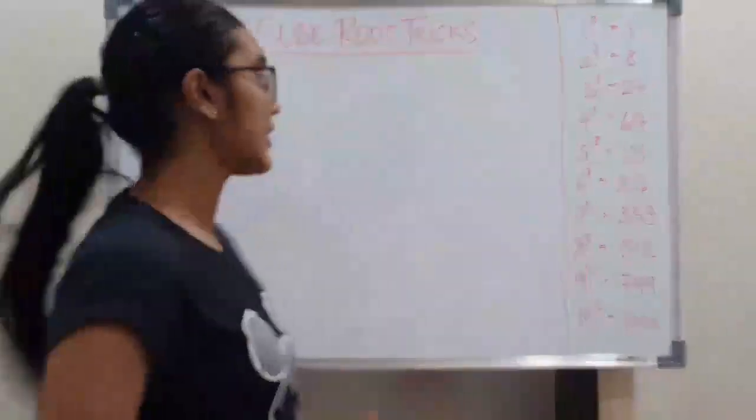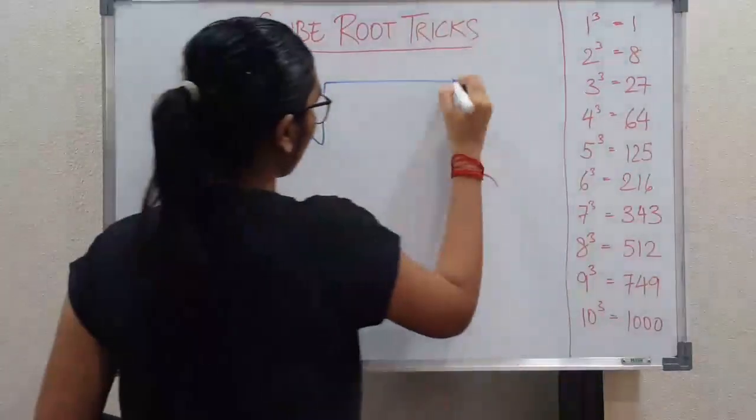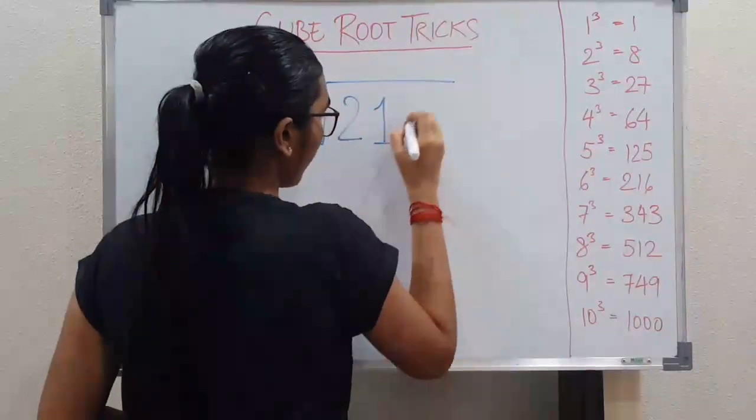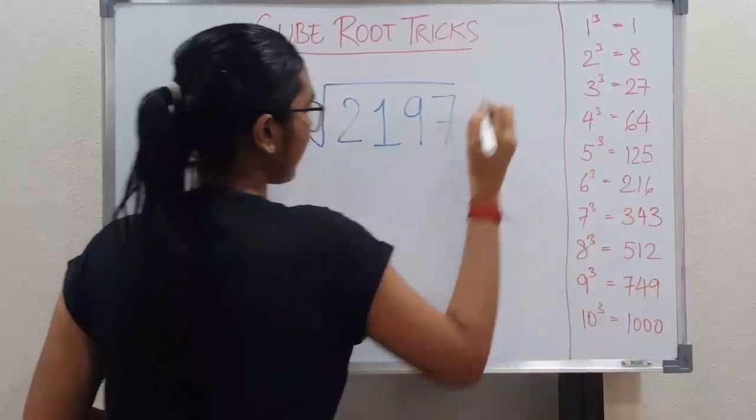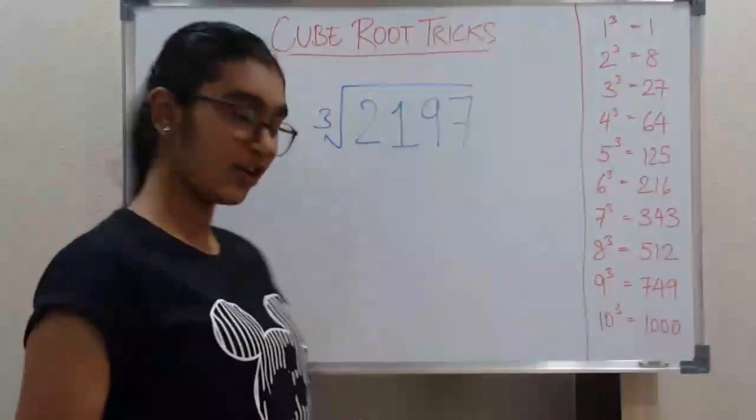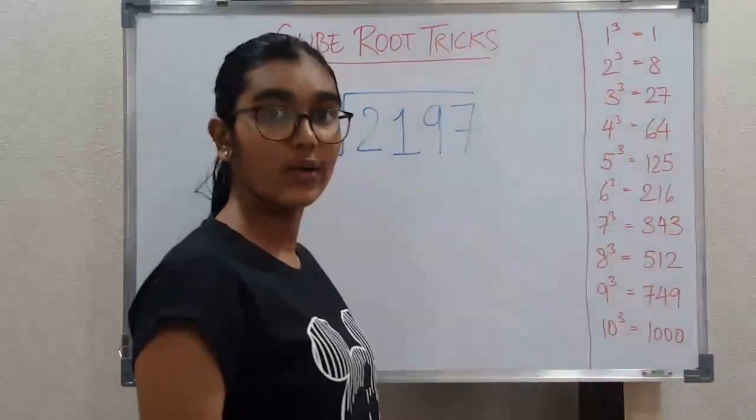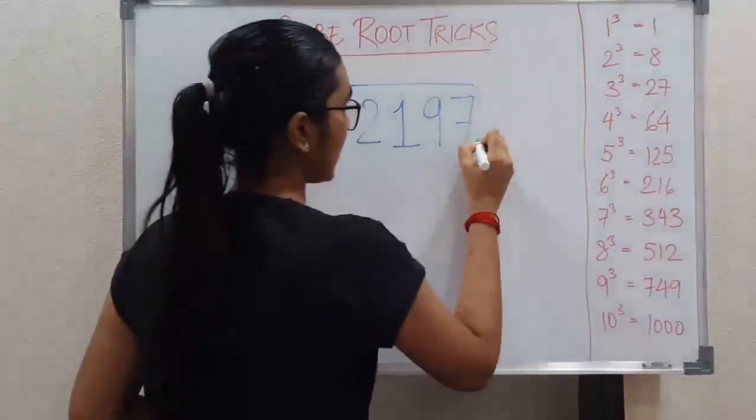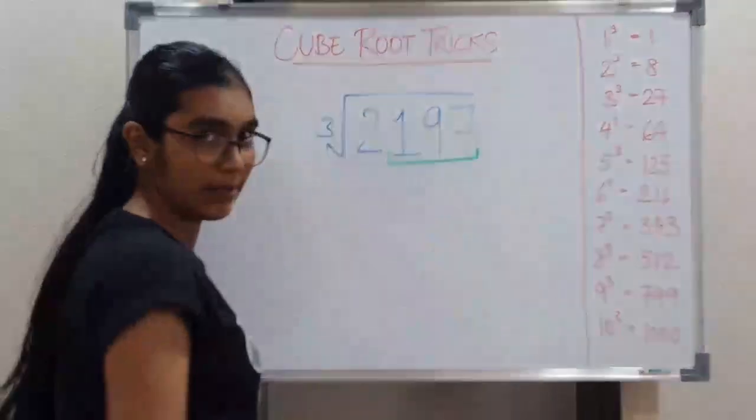We are going to look at our first example, the number 2197. This is our first number that we are going to find the cube root of. Now what we are going to do is separate these last three numbers in one bracket.